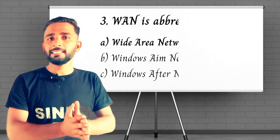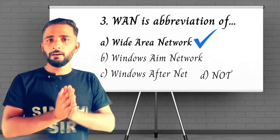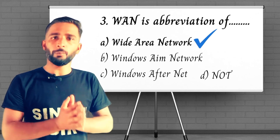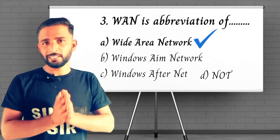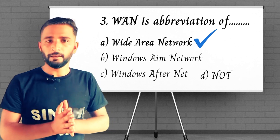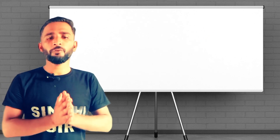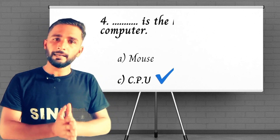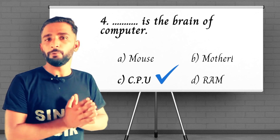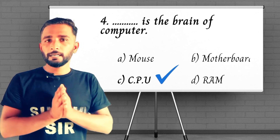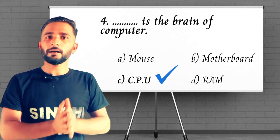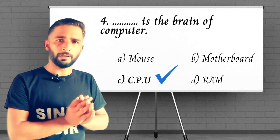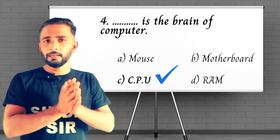Question number three: what is every version of Wide Area Network? Answer is option A. Question number four: dash is called the brain of computer — answer is option C, CPU.